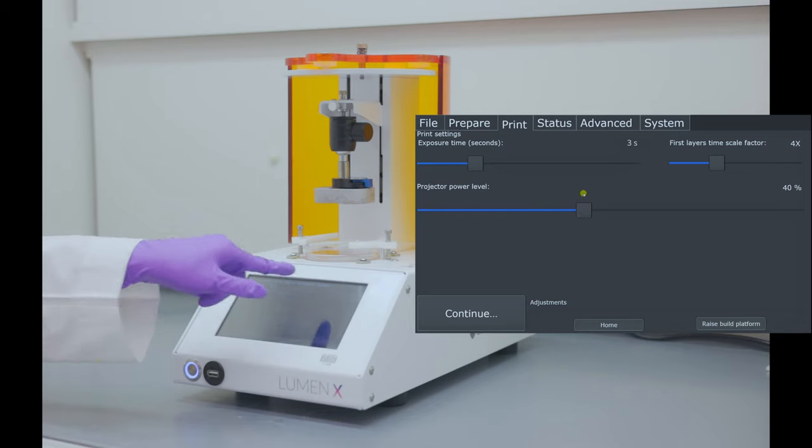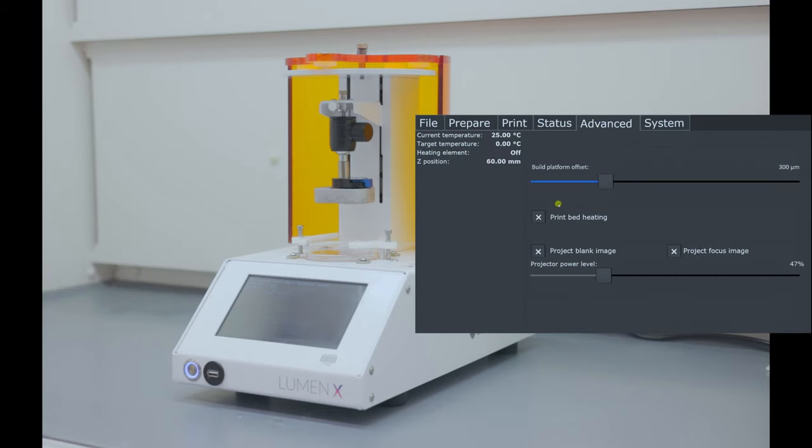Before tapping on continue, go to advanced menu. Here, you can enable print bed heating and adjust the build platform if needed. Now, go back to print menu and tap on continue.